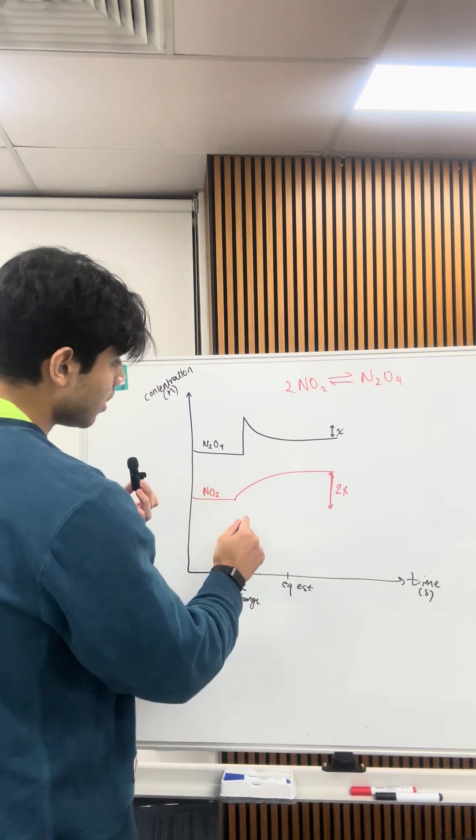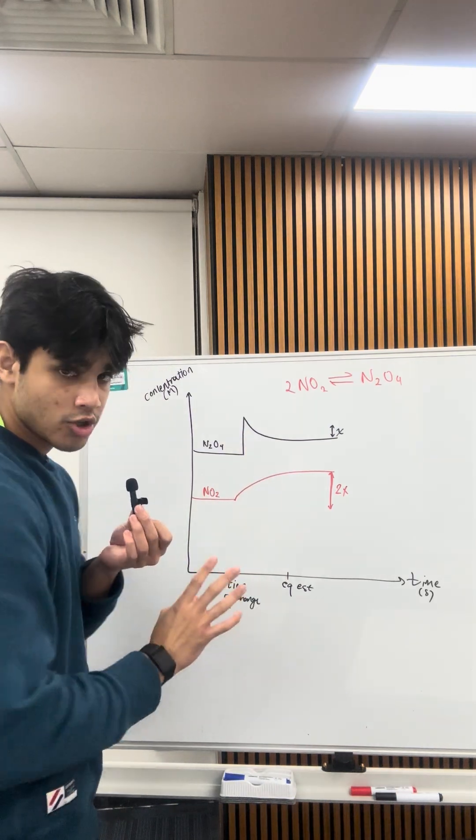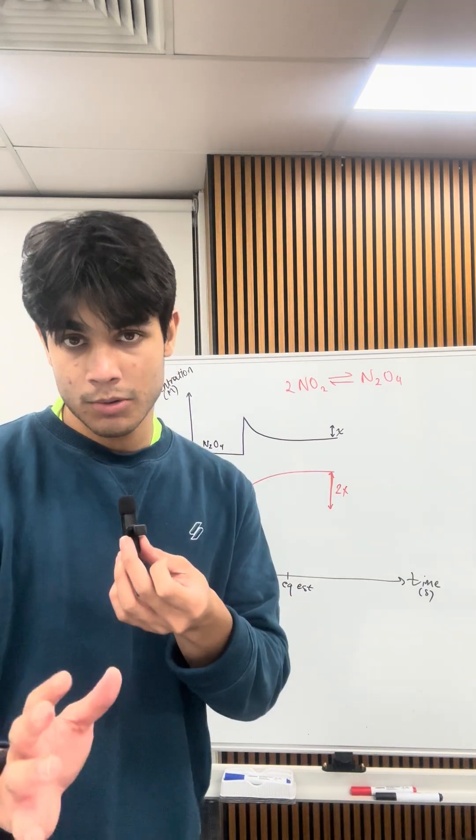Number one, you want to make sure that your graph, wherever you make the change, is labeled as time of change. Let's start with x and y-axis. Time of change is labeled, and equilibrium established is labeled.